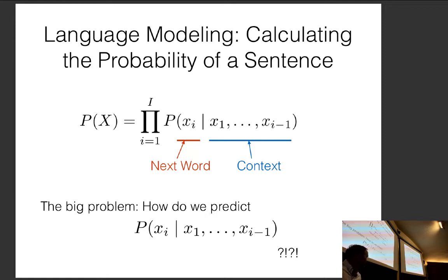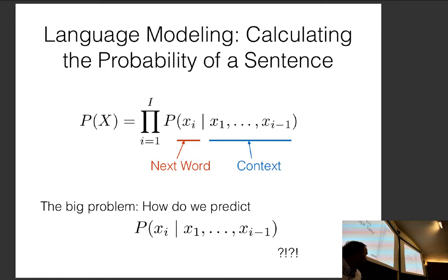The big problem then becomes: how do we predict the probability of the next word? Predicting the next word is obviously not easy — it's not easy even for humans — but we'll try to do our best.